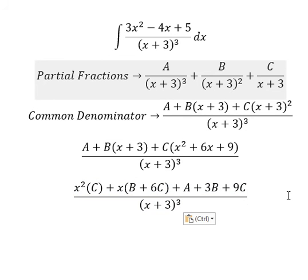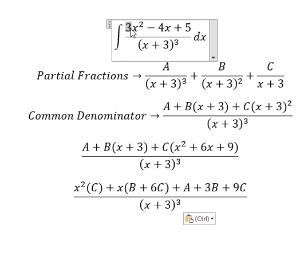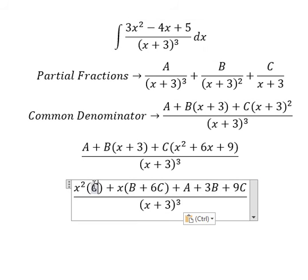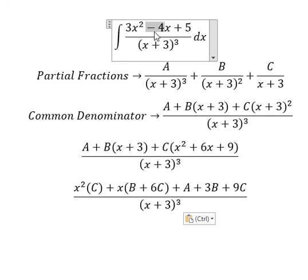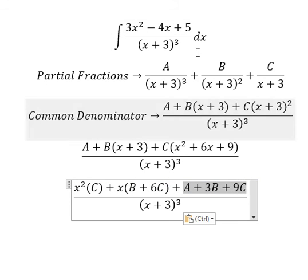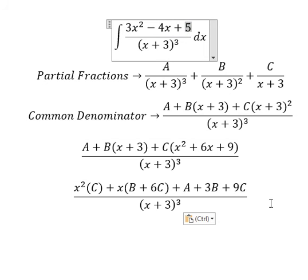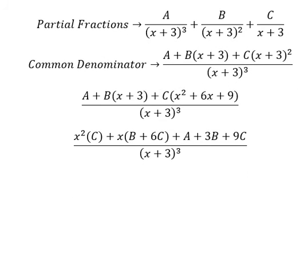Now we compare coefficients. We have 3 here, so C equals 3. For the x term, we have negative 4, so B plus 6C equals negative 4. The constant term equals 5. Now we create the system of equations.